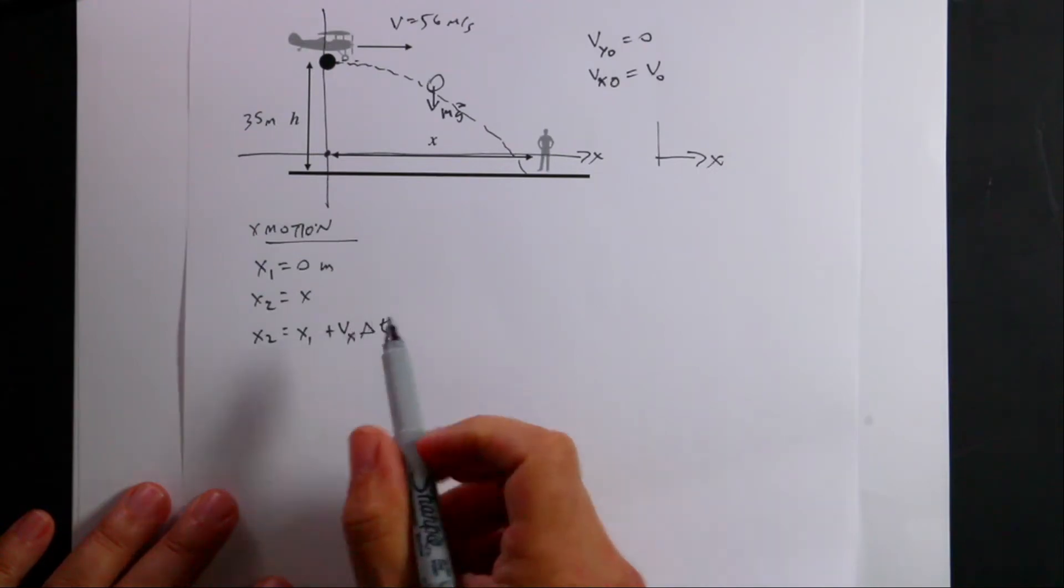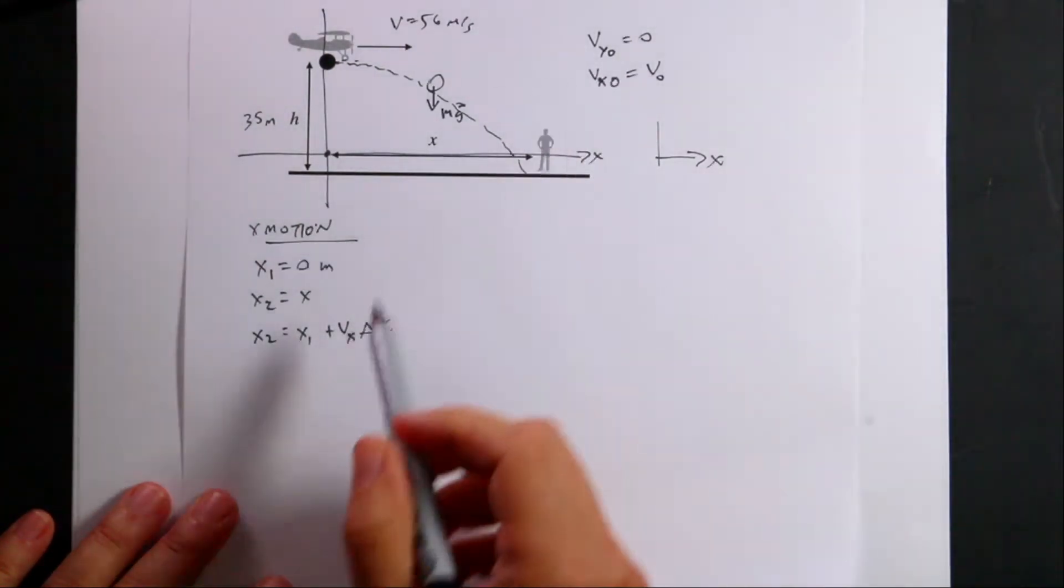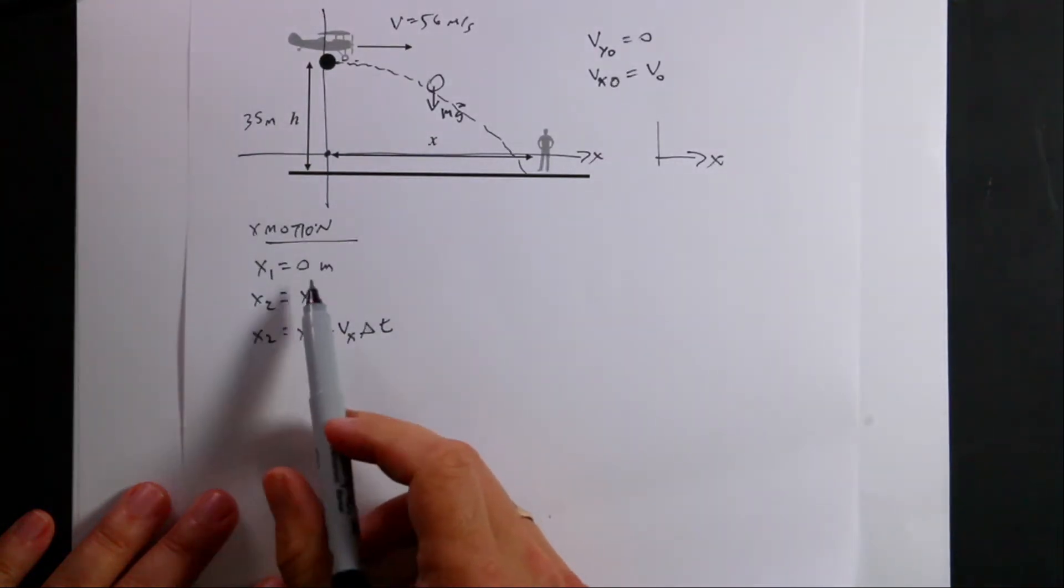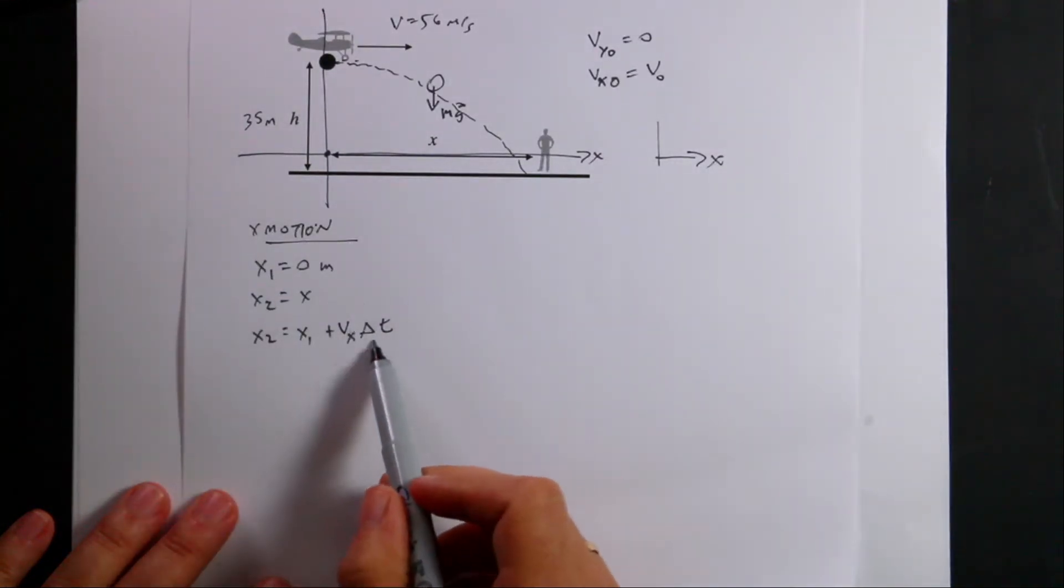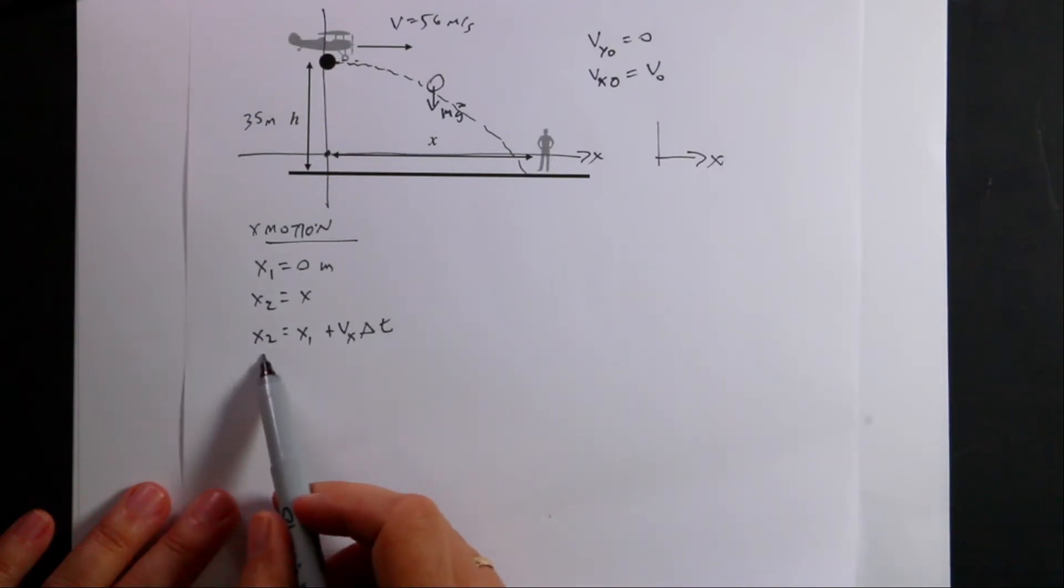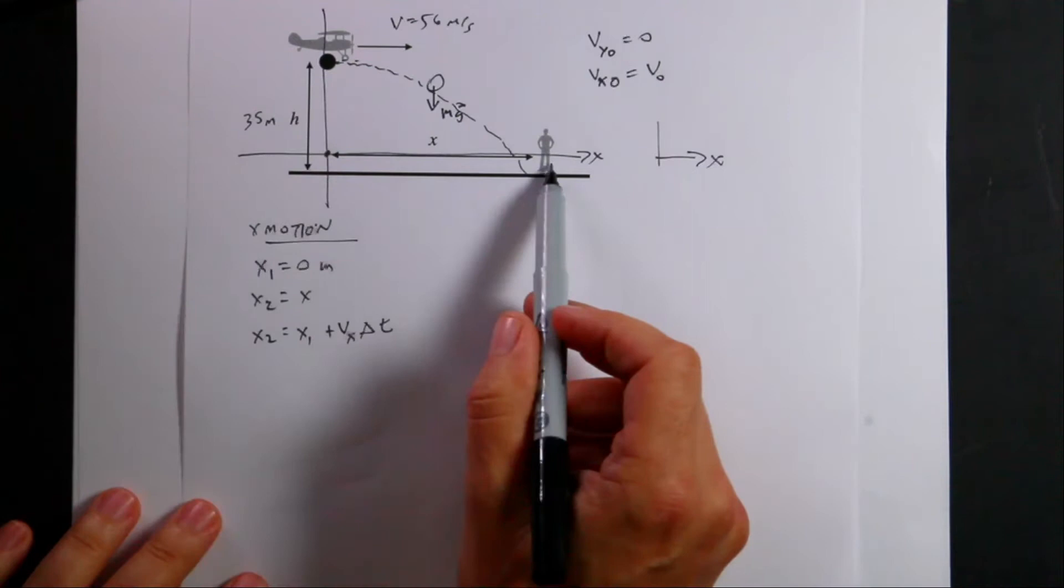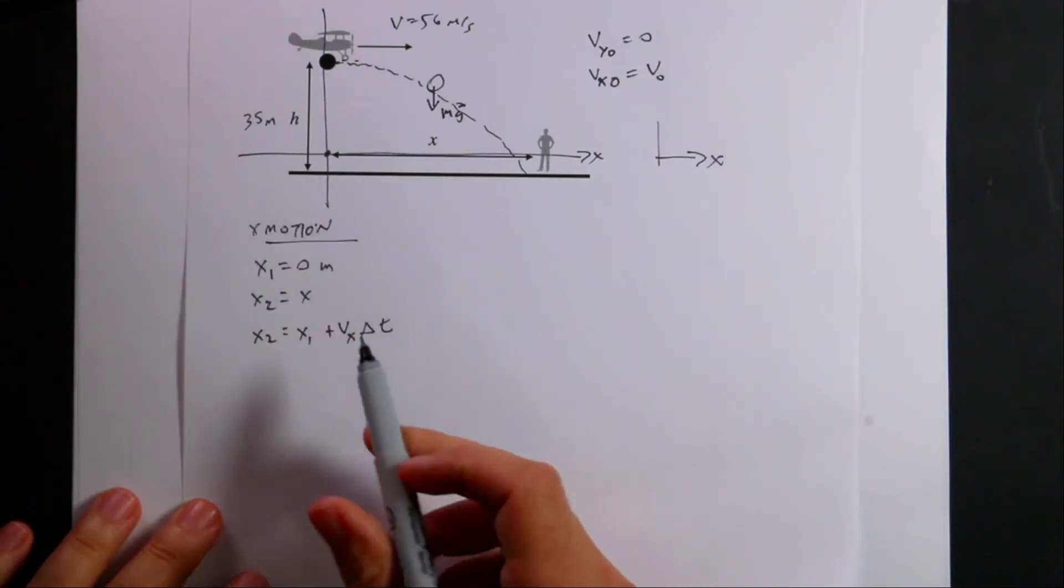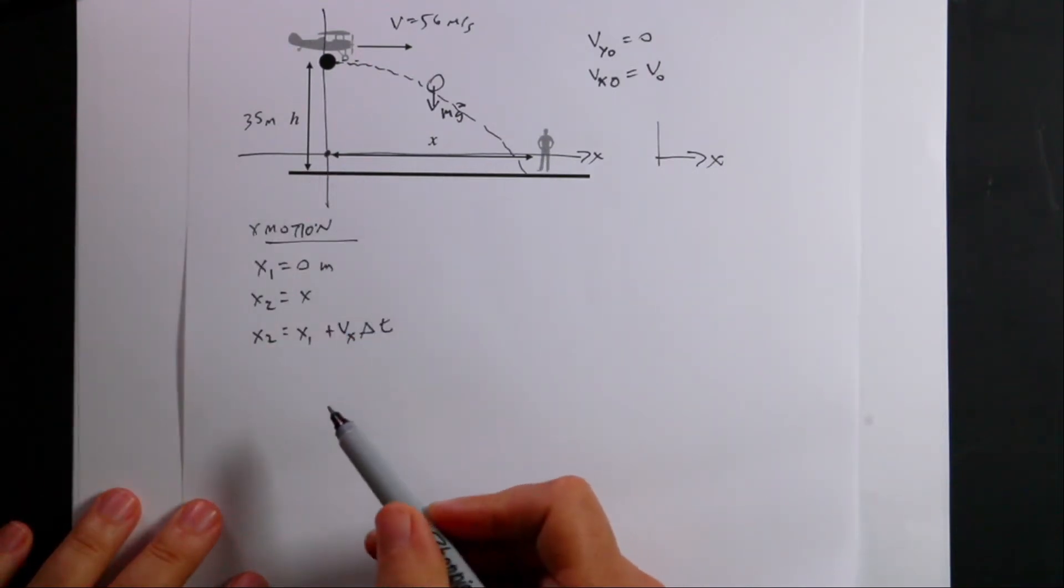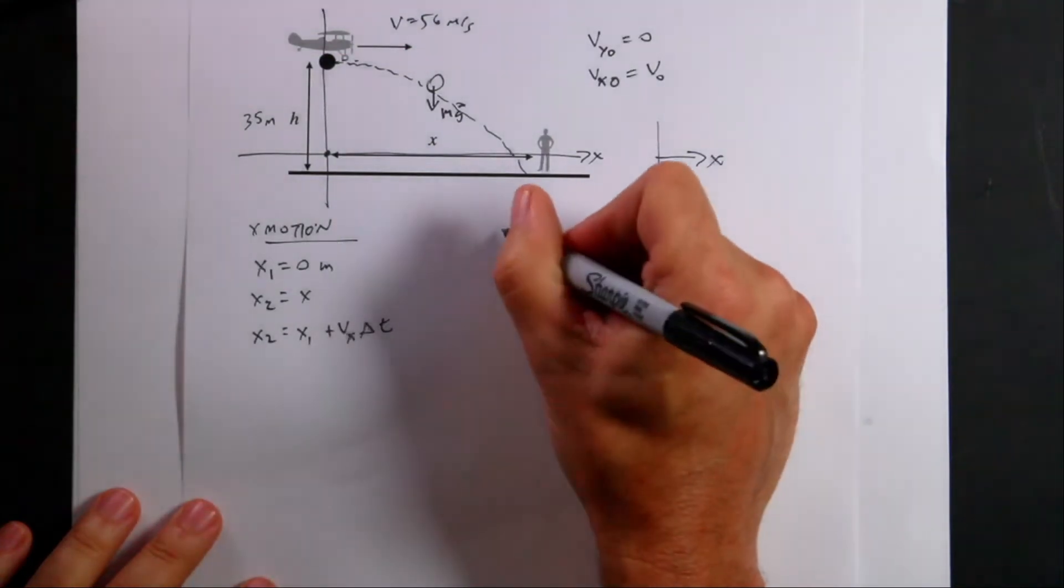This comes from the definition of average velocity. This says if I know the x velocity, which I do, and I know the starting location, which I do, and I know the time, which I don't, I can find the final position. So I'm trying to find this final position so I know where to release the package from. But I don't know the time. So I can use the y motion to find that.